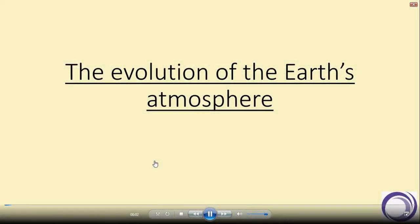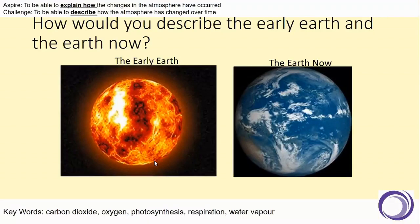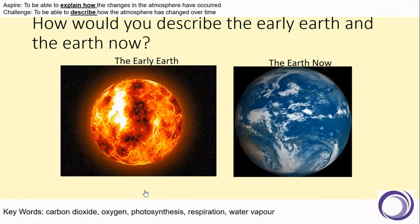Hello everyone and welcome to our lesson on the evolution of the Earth's atmosphere. Today we'll be looking at how we think the atmosphere of the Earth has changed over time and what the atmosphere consists of now. So let's start with a little task. On the screen you can see two images, one of the early Earth and one of the Earth now. How would you describe the Earth in both of those images?